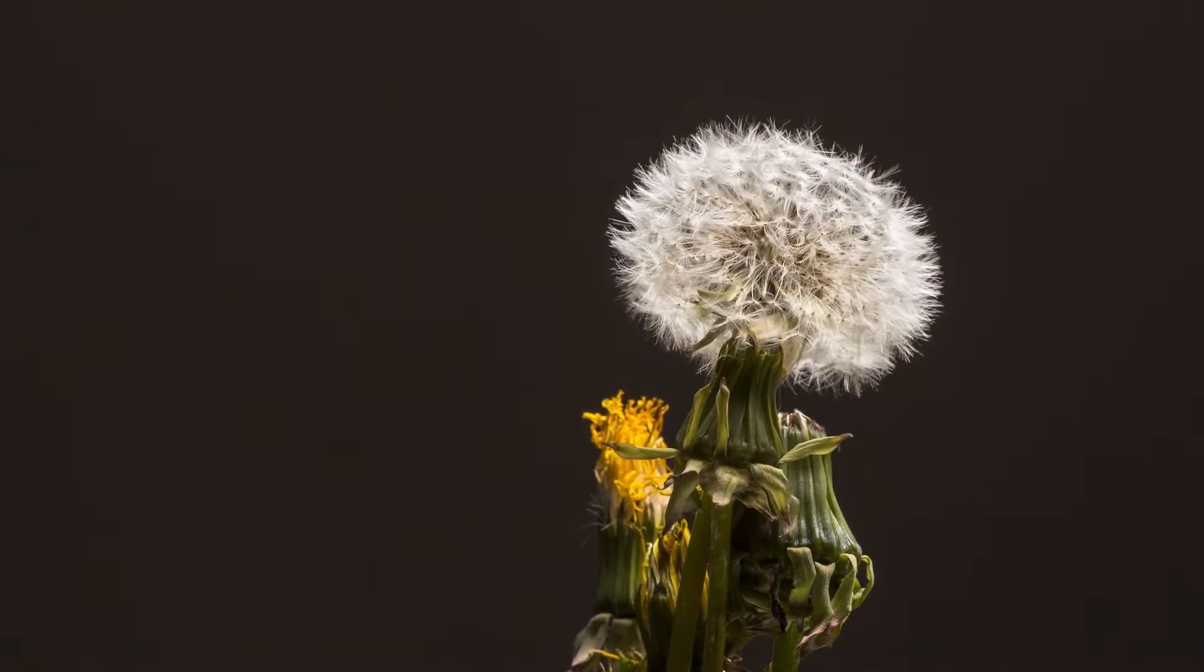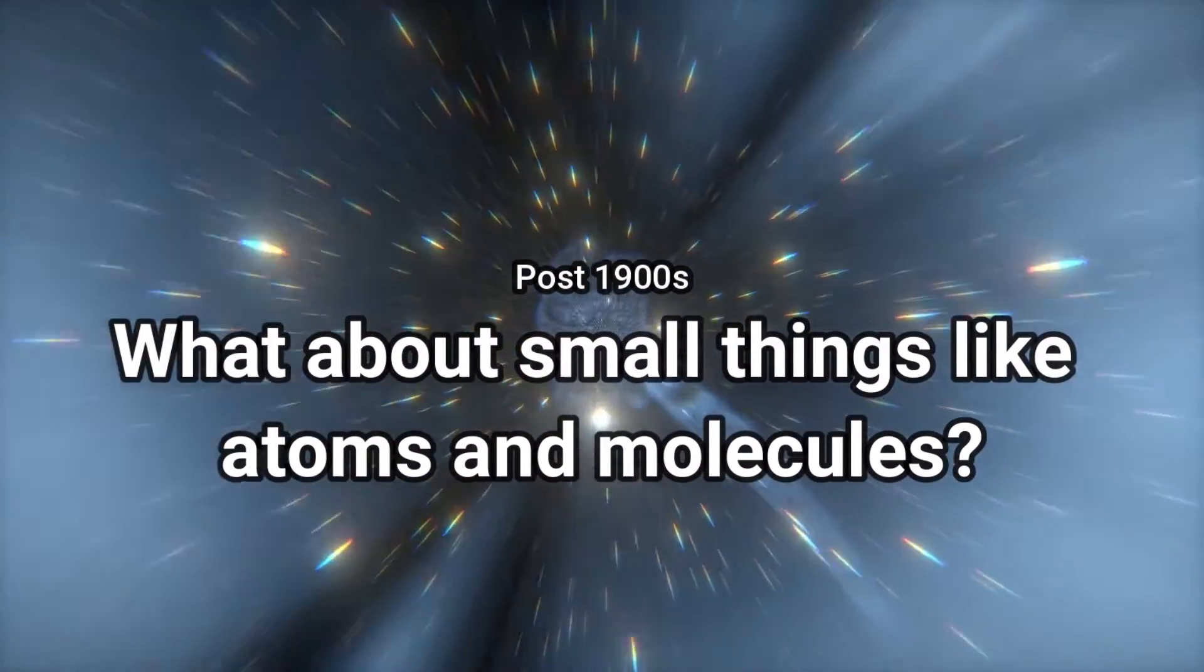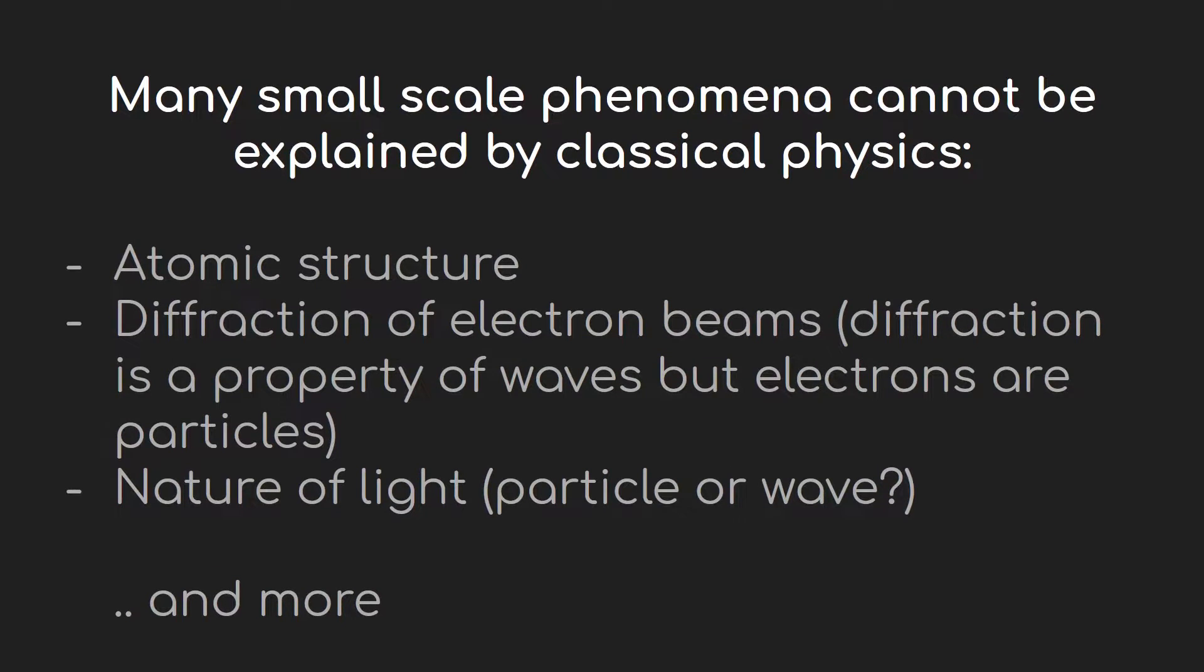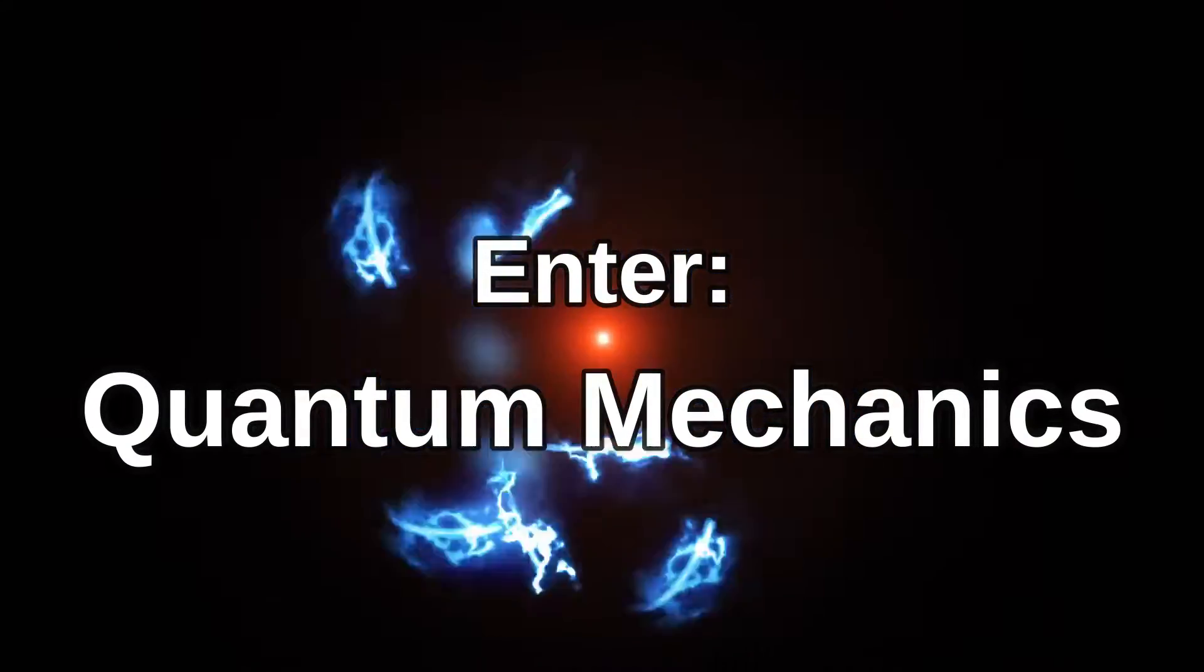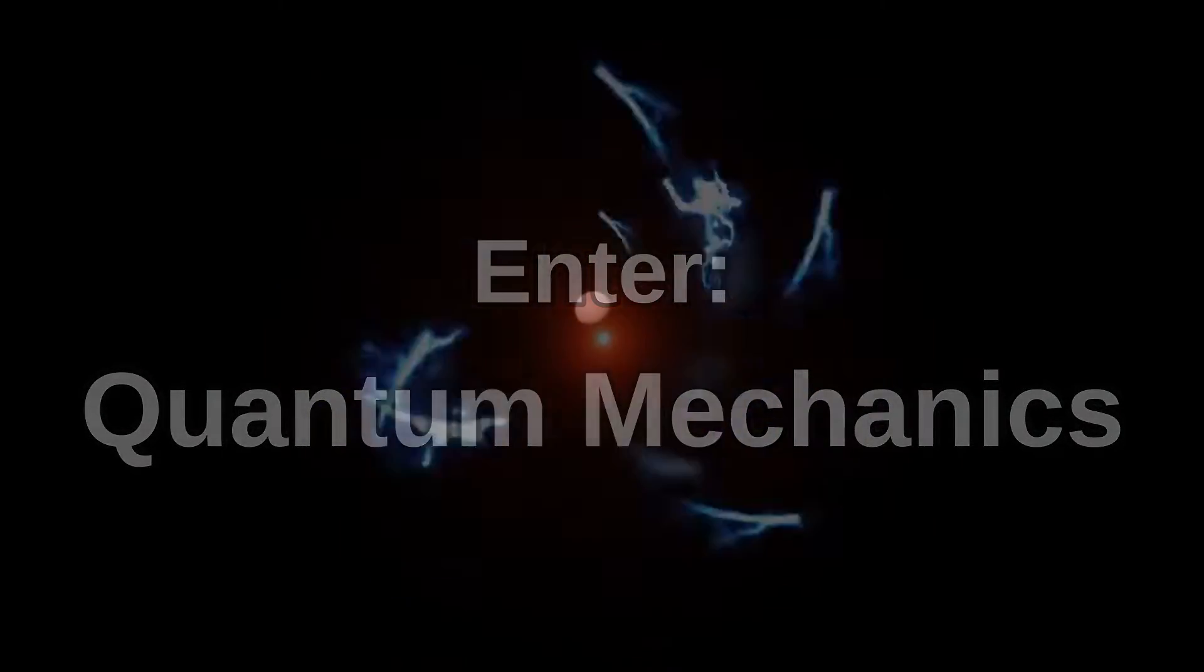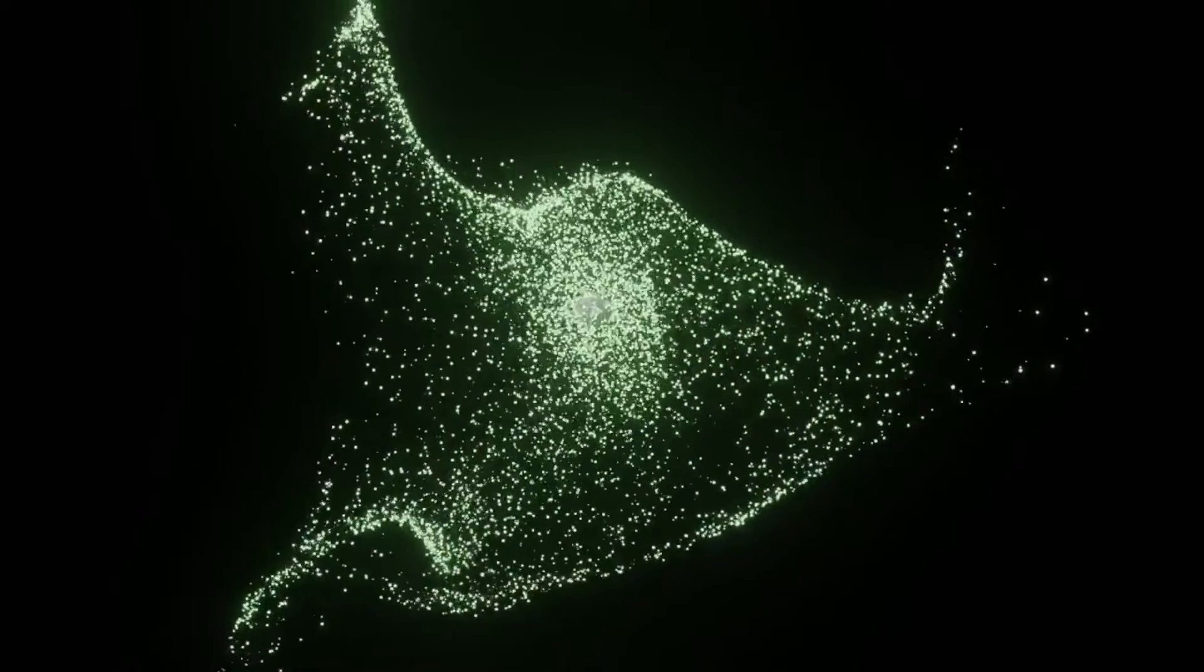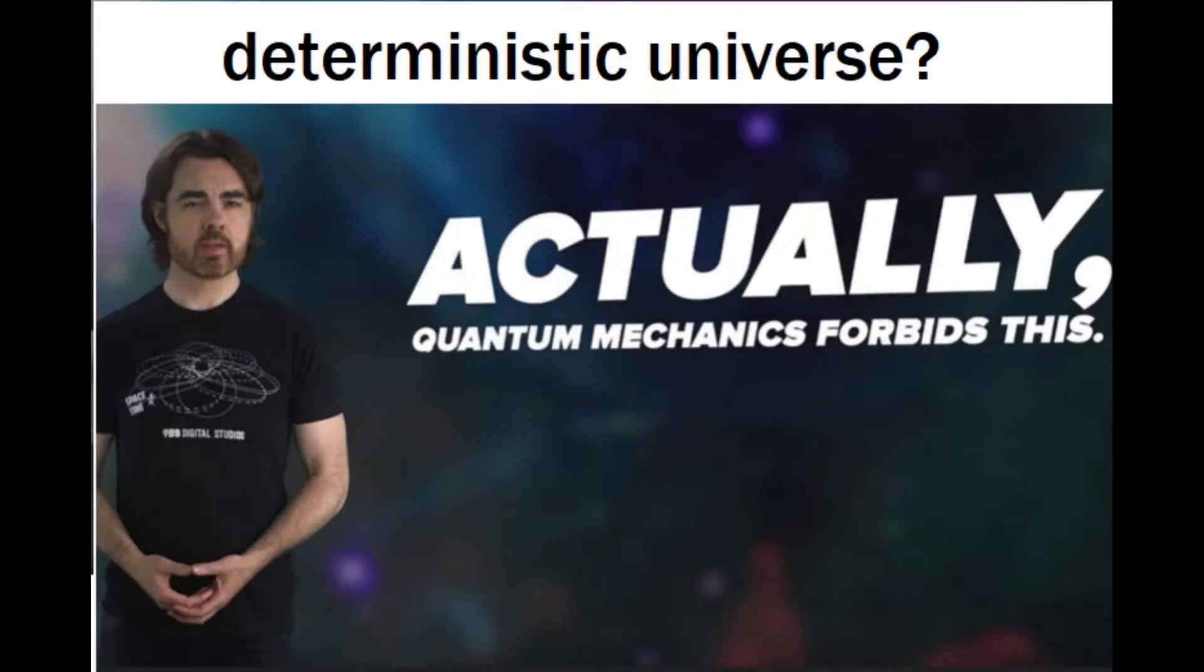But things changed in the 20th century when physicists began investigating smaller length scales, that of the size of an atom. It was observed that the behavior of subatomic particles was very different from the larger sized things up here and could not be explained by classical physics. This led to the development of the infamous quantum mechanics by various scientists over the course of many years. Today quantum mechanics is a consistent theory and it has changed a lot of things about how physicists interpret reality. And now let's see how it also forbids the deterministic model of the universe.